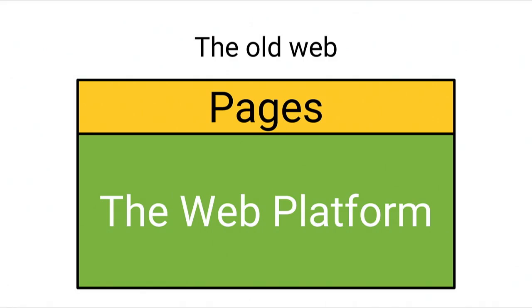Part of what makes Progressive Web Apps possible now is a shift in the way that the web platform itself is built. In the old web, you've got custom-designed high-level features for achieving things that the W3C thought web developers wanted to do — people want images, so you get an image tag; people want to lay things out in tables, so you get a table tag.